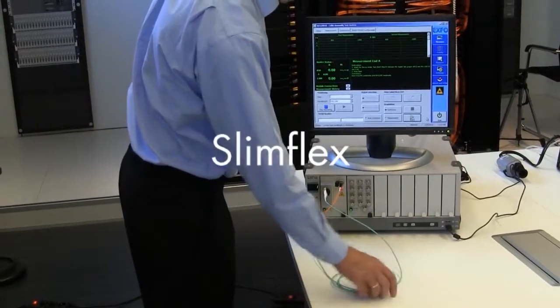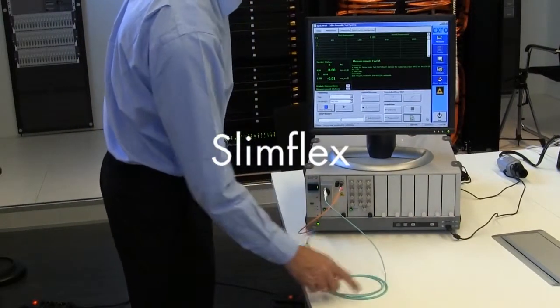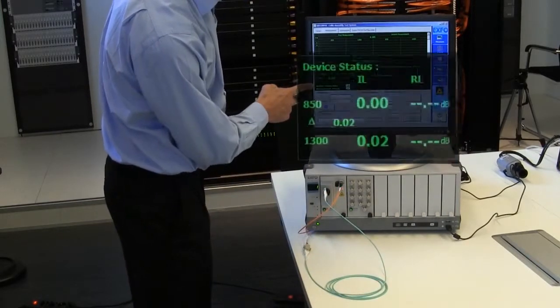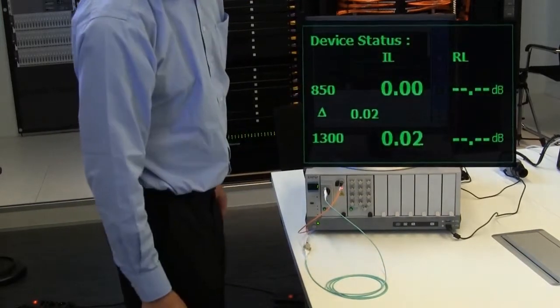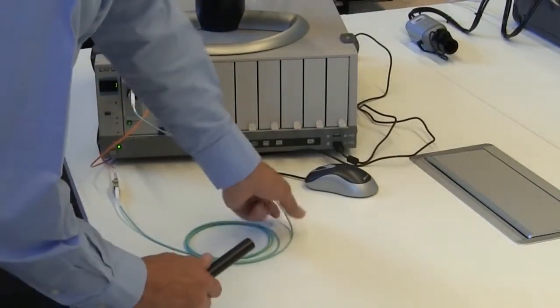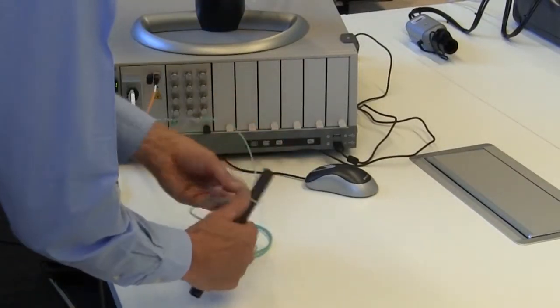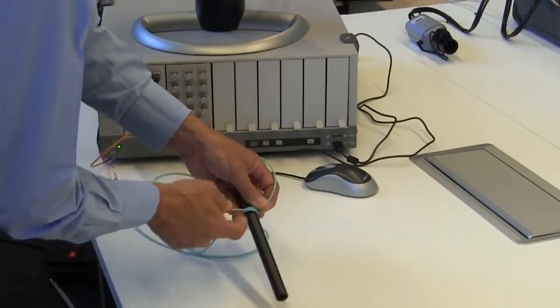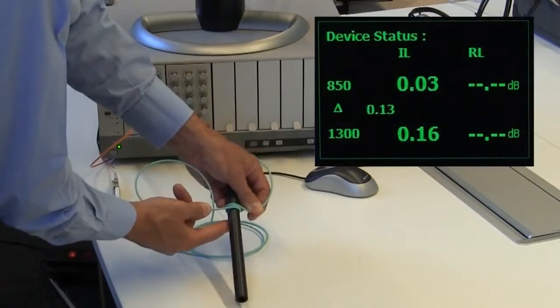Then we do the same test on a benzinsensitive SlimFlex patch cord. First of all we do the reference test and then wrap the cord around the mandrel. You can see now that the insertion loss increase is negligible compared with the normal fiber.